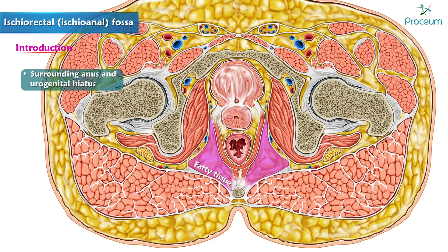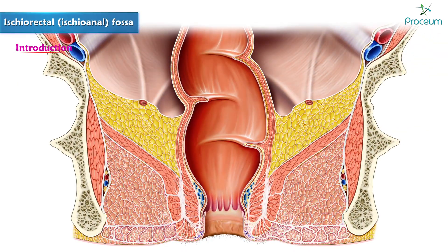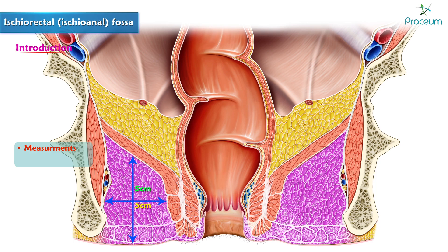The two fossae communicate with each other behind the anal canal. They help in dilation of the anal canal during defecation, i.e., passage of flatus and feces. Each fossa measures about 5 cm in length, 5 cm in width, and 5 cm or slightly more in depth.